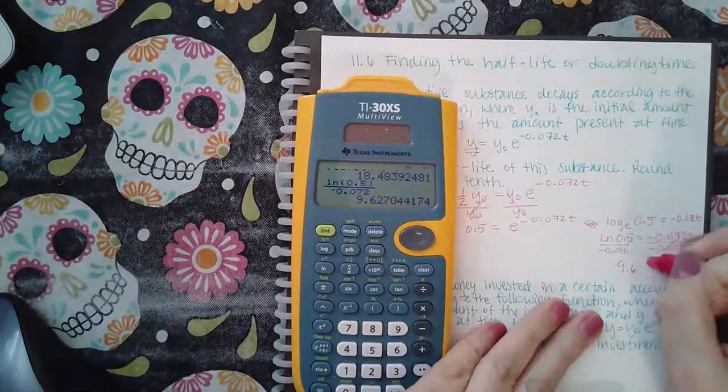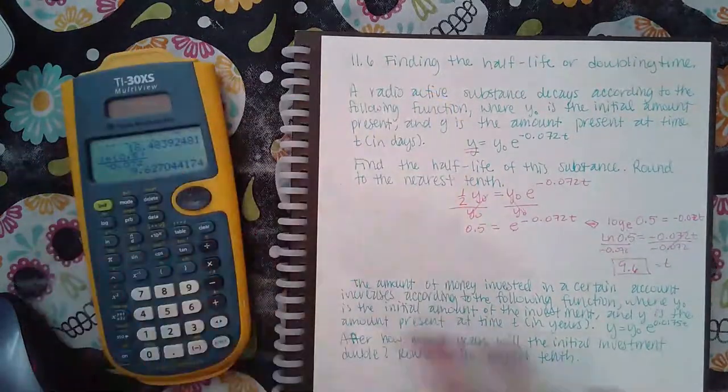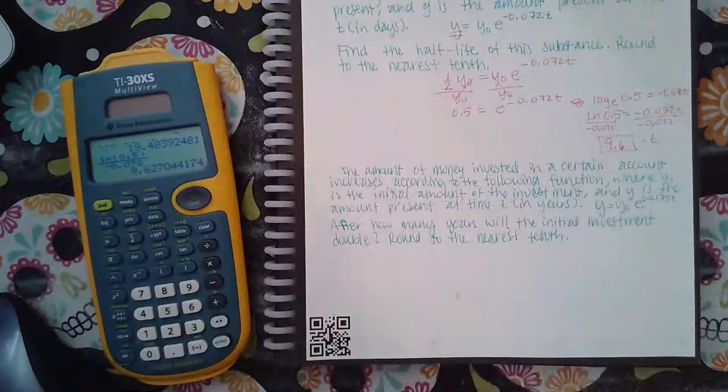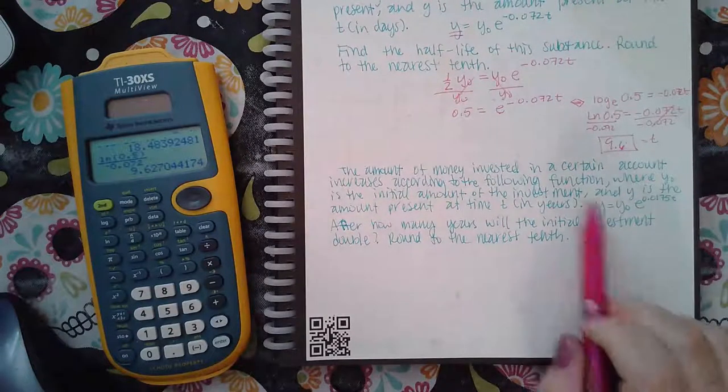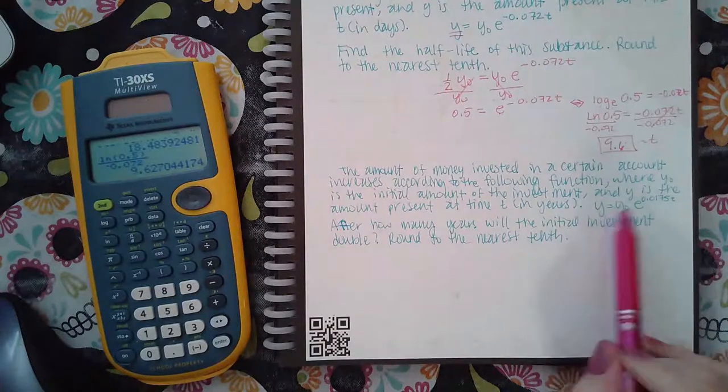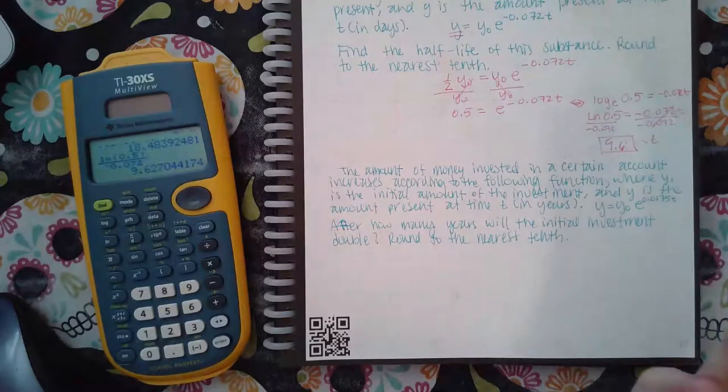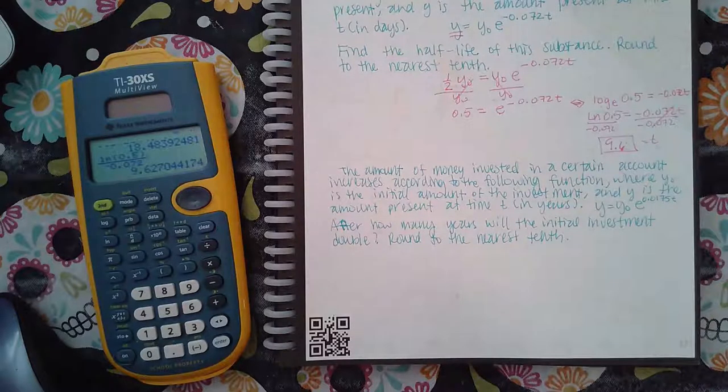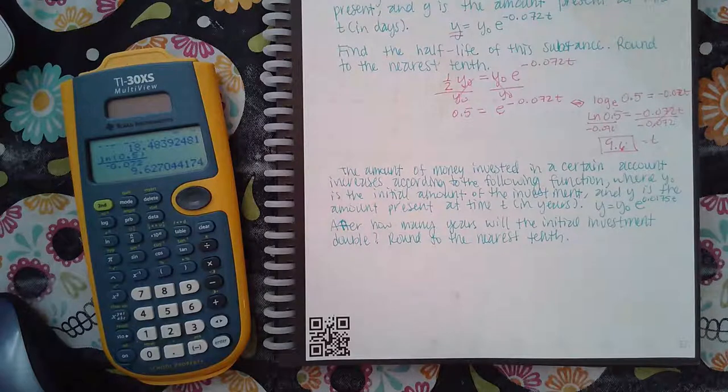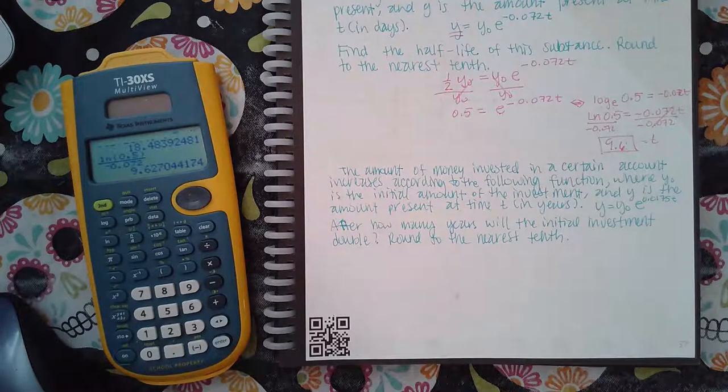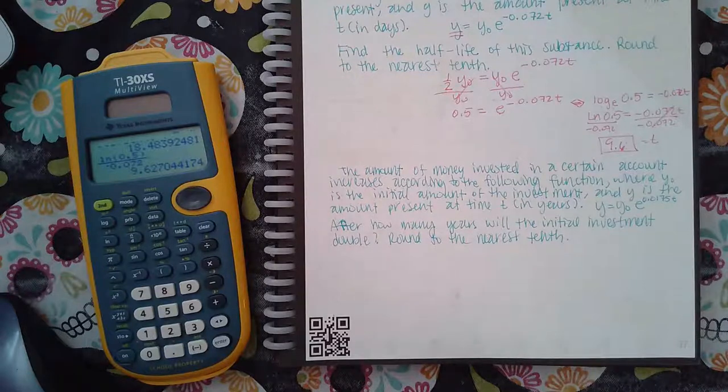The next example says the amount of money invested in a certain account increases according to the following function, where y sub zero is the initial amount. So again y sub zero is in place of p, and y is the amount present at time t, which means y is in the place of variable a. After how many years will the initial investment double?